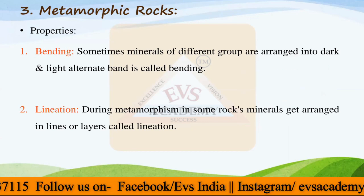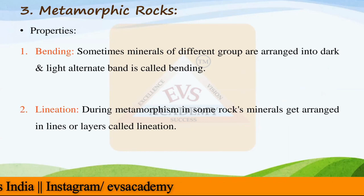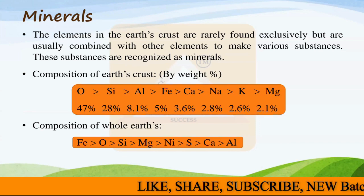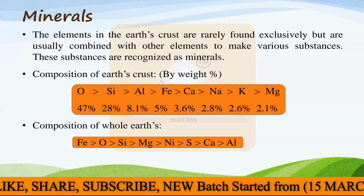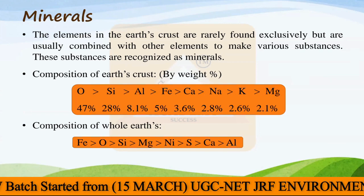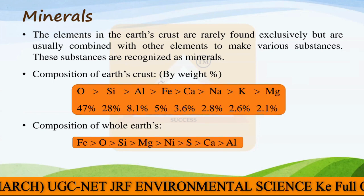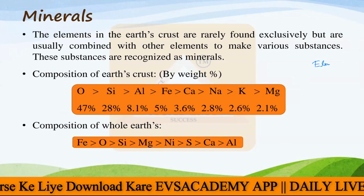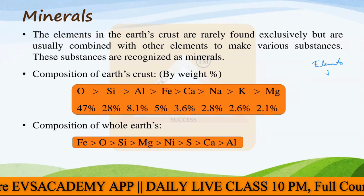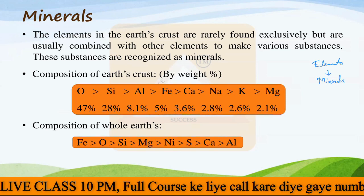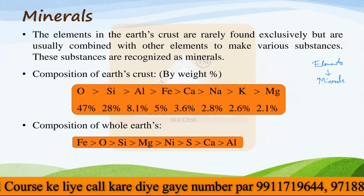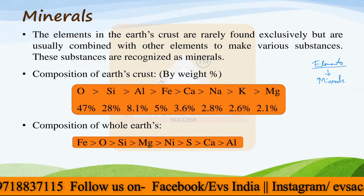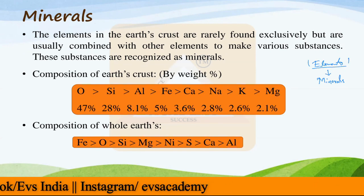So these two are the properties of metamorphic rock: banding and lineation. The next topic in this chapter is minerals. The elements in the earth's crust are rarely found exclusively but are usually combined with other elements. Multiple elements come together to form minerals. The combination of multiple elements in attached form is termed as minerals.